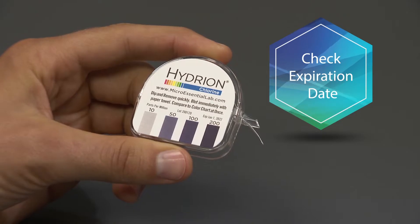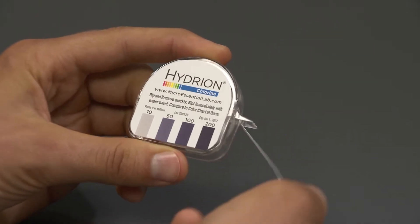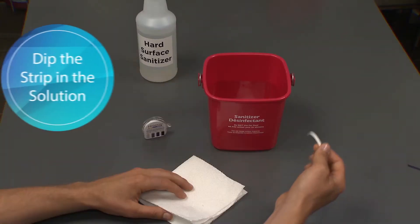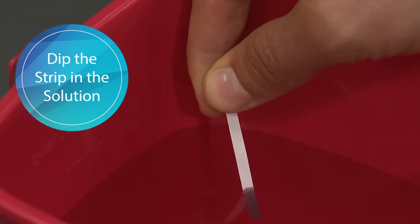Check the kit to make sure it hasn't expired. Tear off about 2 inches of test paper and dip the strip into a room temperature chlorine solution.